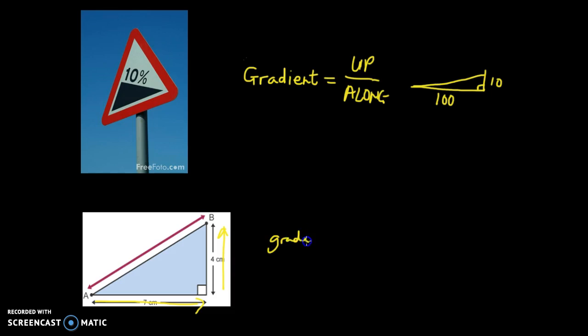So our gradient equals 4 over 7. For every 7 boxes we go along, we go 4 boxes up, and we can leave it as that. I know some of you like to convert it into a decimal, but just leave it as a fraction. It's actually far more useful.